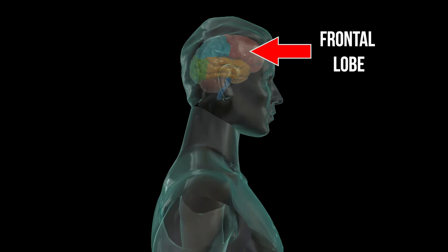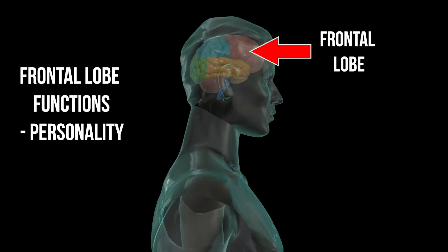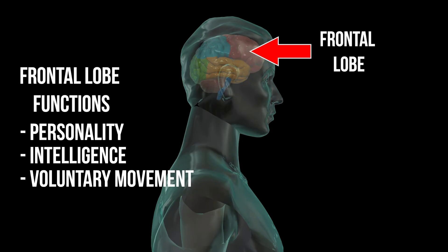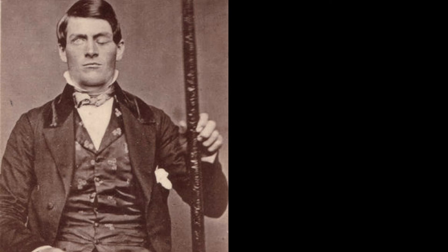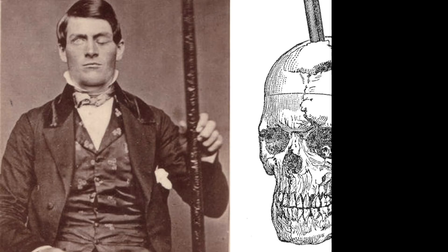Lastly, the frontal cortex, highlighted here in red, lies just behind the forehead and is involved in personality, intelligence, and the control of voluntary muscles. To understand the functions of the frontal lobe, it's best to discuss the very famous case study of Phineas Gage. Phineas Gage was a railroad worker in the mid-1800s, and at the age of 25 in 1848, he suffered a terrible accident in which an explosion drove a metal rod through the left side of his face, through the frontal lobe of his brain, and out the top of his skull. Tragic. But Phineas Gage survived the accident.